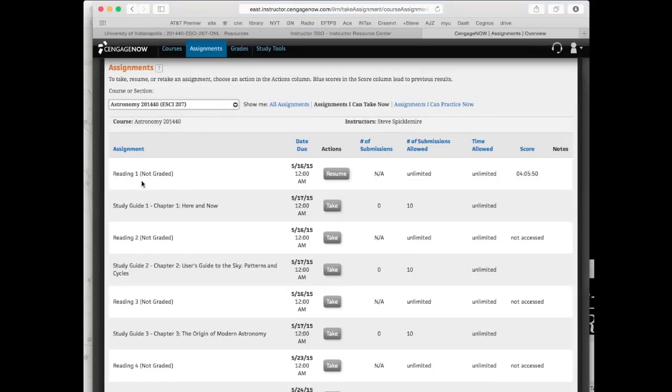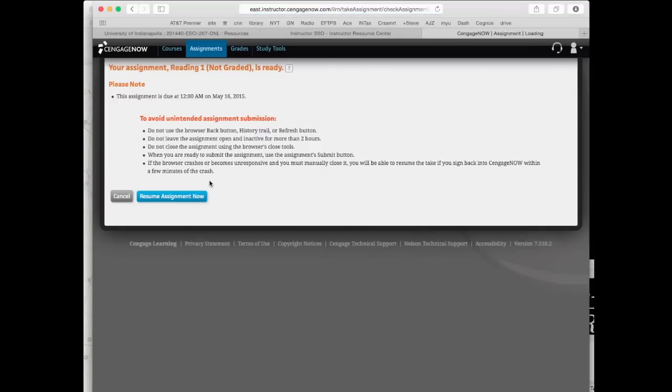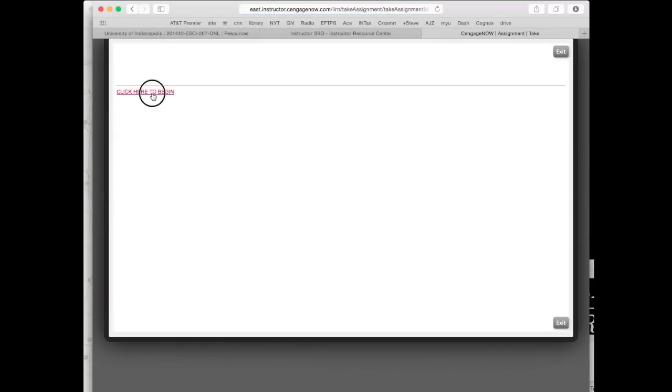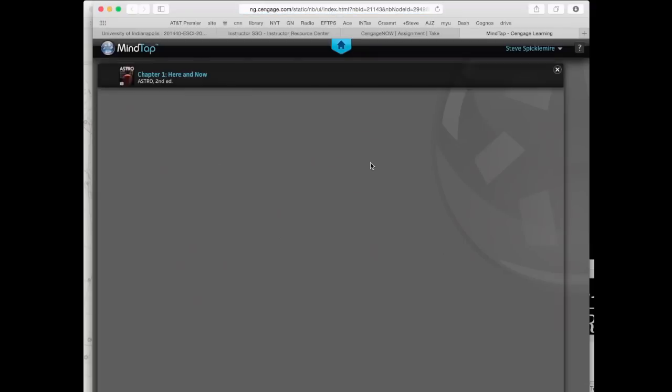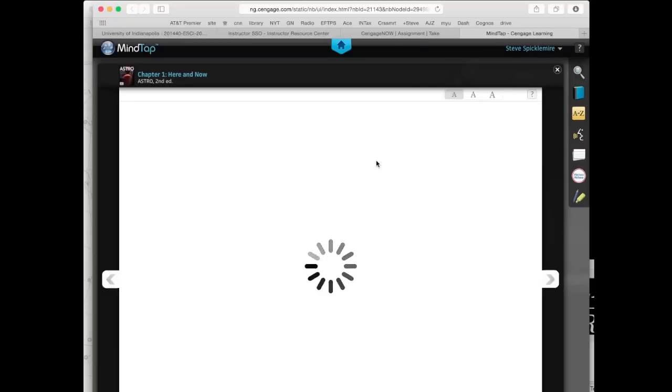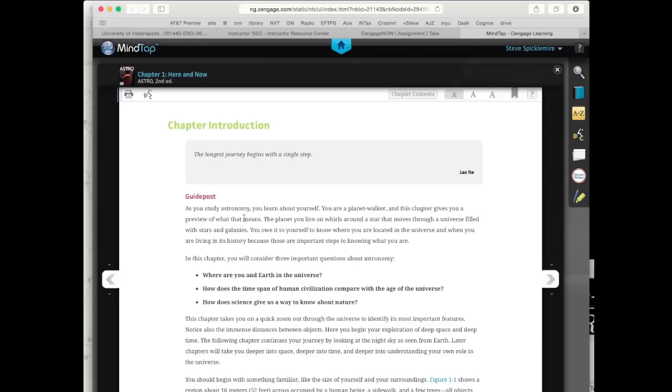The assignments I want to point out, there are reading assignments and study guide assignments for each chapter. The reading is straightforward. This just takes you to a link to the textbook. Let me point out one thing here about that link. First, it'll jump right into the chapter, whichever chapter it is, and you can study that chapter. There are a couple of tools here that are useful. For example, if you don't feel like reading, you'd rather be read to, there's an interesting feature where you can select the text and then you can say, please read it to me.